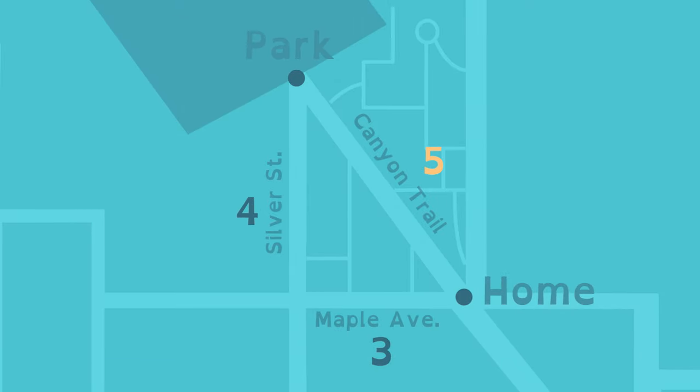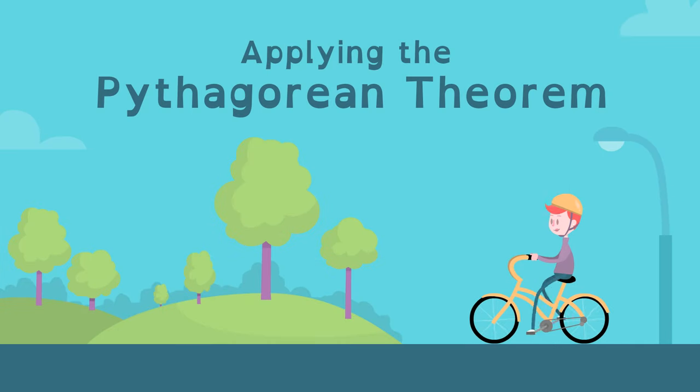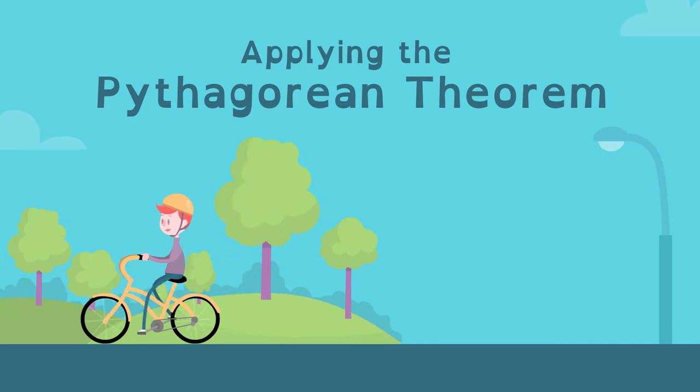Again, the length of Canyon Trail is 5 miles. If you can represent a problem using a right triangle, the Pythagorean Theorem can help you find distances.